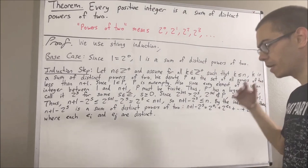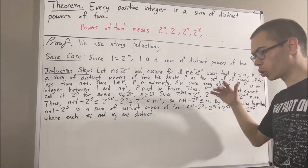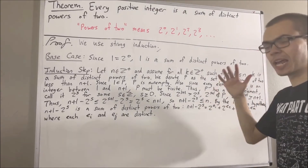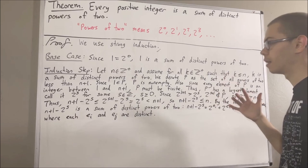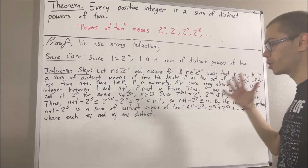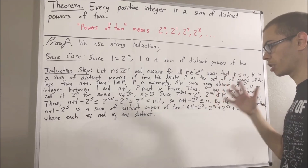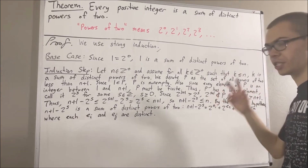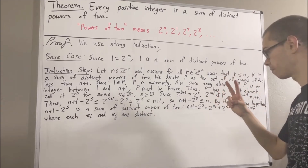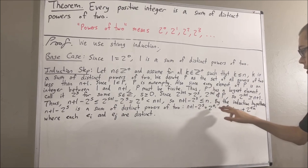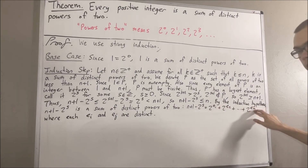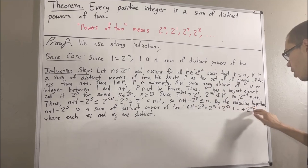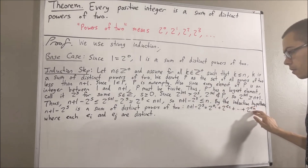Now, from here, we are going to show that n plus one is a sum of distinct powers of two. To do that, we're going to split this up into two cases: either one of these exponents is equal to s, or none of them are equal to s. Let's start with the case where one of these exponents is equal to s.